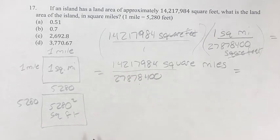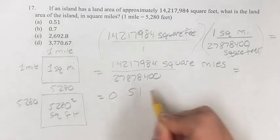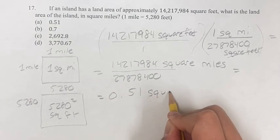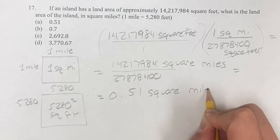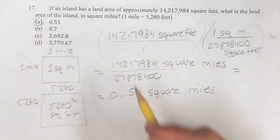To find this, you put this into your calculator and get that it's roughly 0.51 square miles. 0.51 lines up with answer choice A.